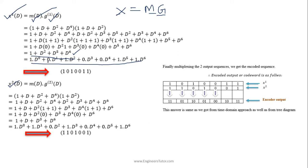We express the first output polynomial in standard form: d-power-0 is present (coefficient 1), d-power-1 is absent (0), d-power-2 is present (1), d-power-3 is absent (0), d-power-4 is absent (0), giving coefficients 1,0,1,0,0,1. For the second output, the polynomial is 1 + d + d³ + d⁶, giving coefficients 1,1,0,1,0,0,1.